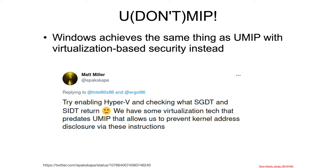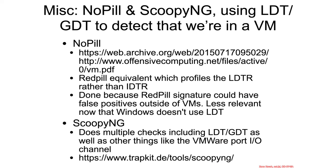And the spoiler is: Windows doesn't actually use UMIP. It turns out they had a virtualization-based security mechanism that predated UMIP, where they used it to block things like SGDT and SIDT. So they already had a mechanism, they're continuing to use that — that's the basket their eggs are in.